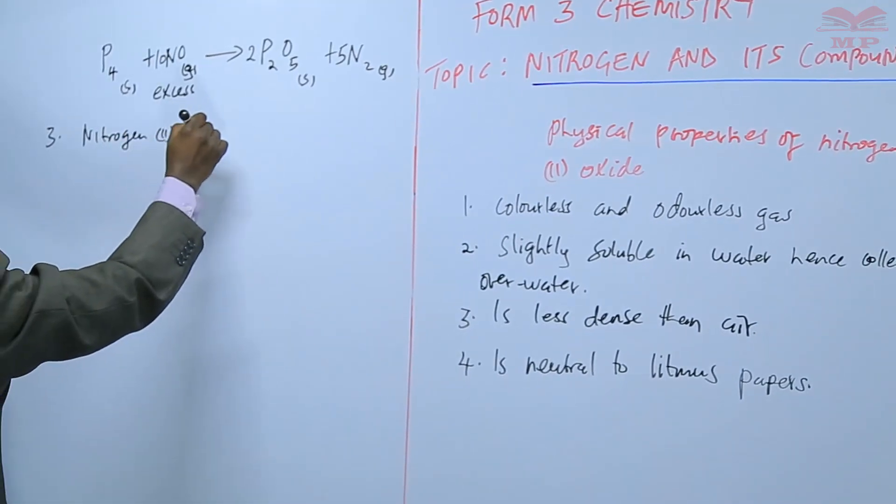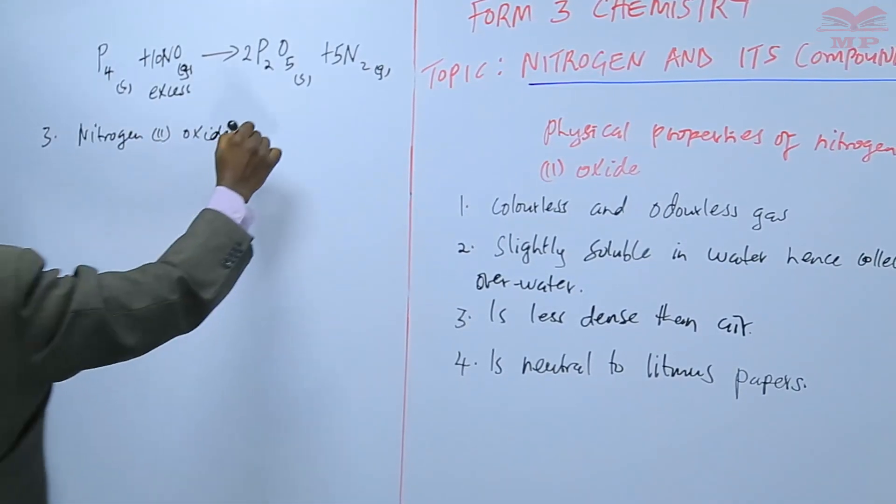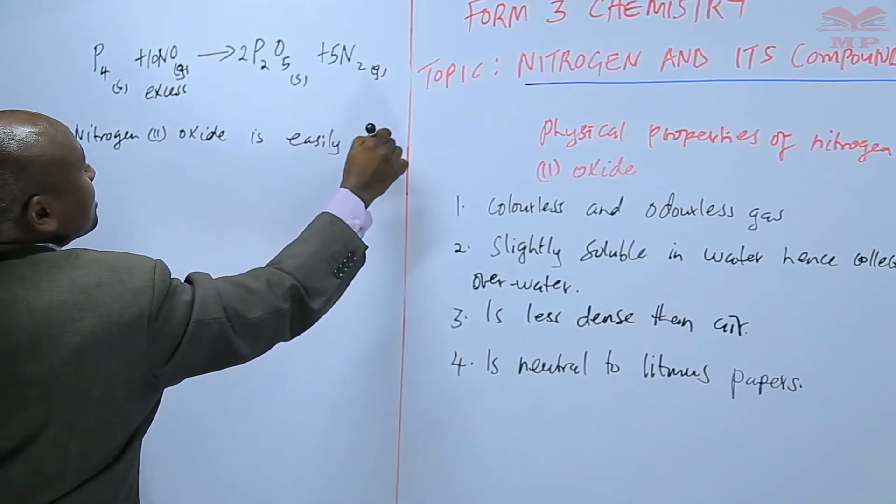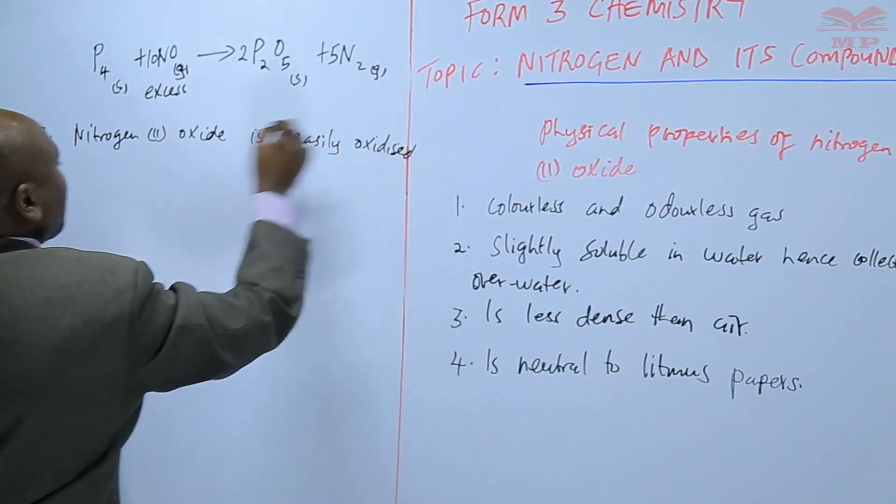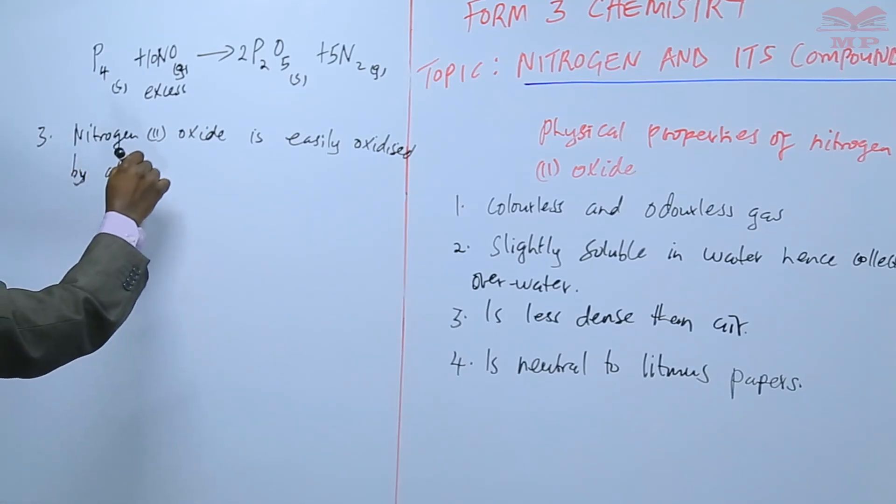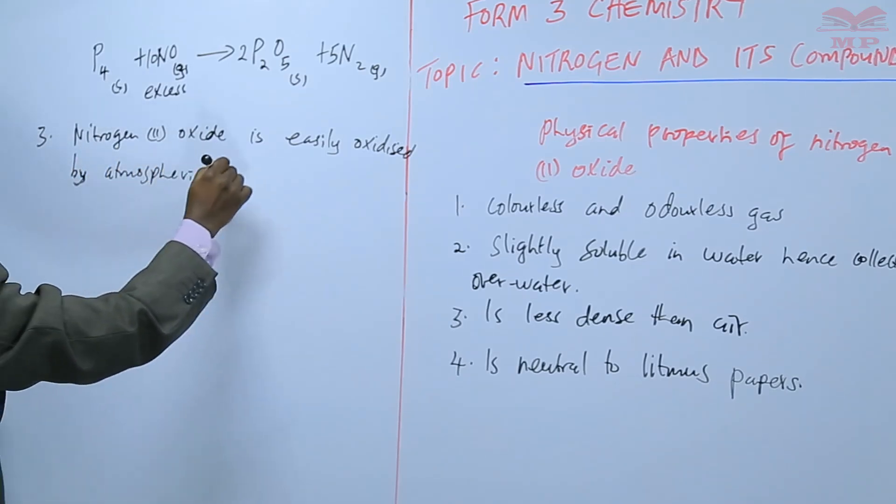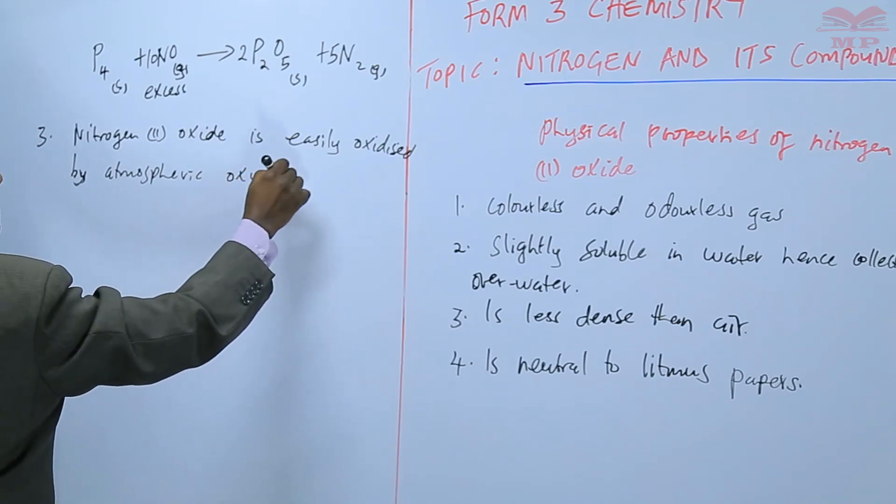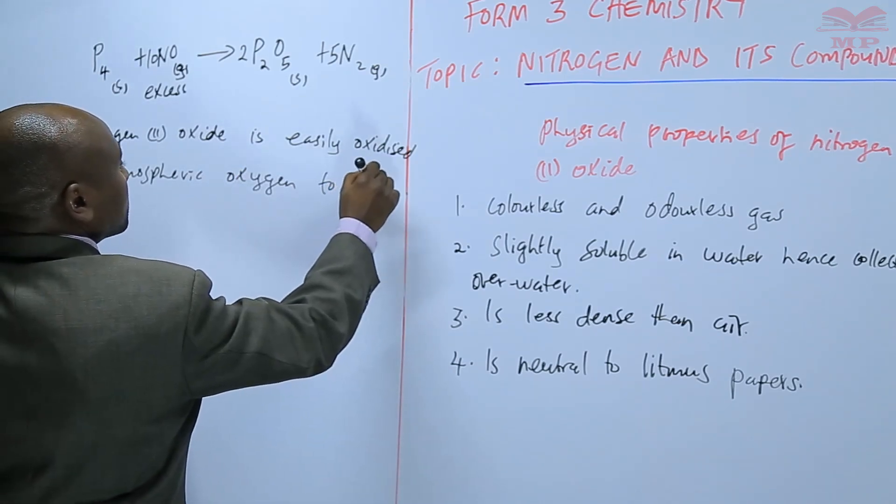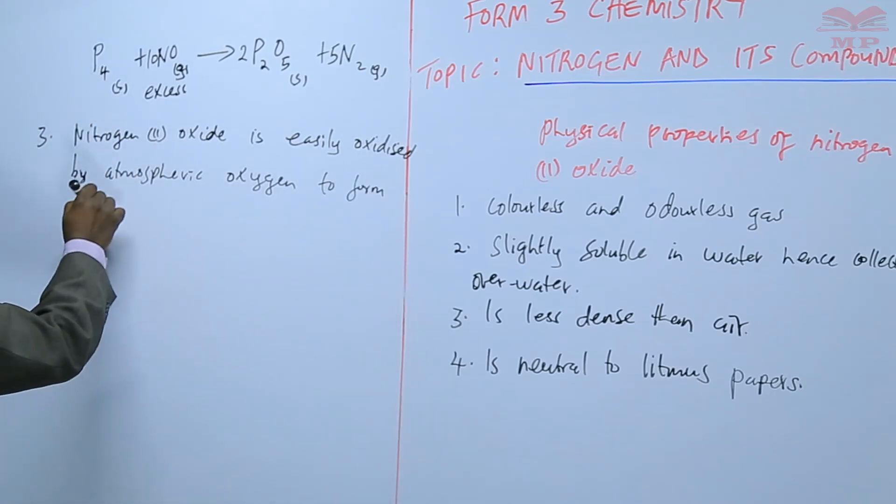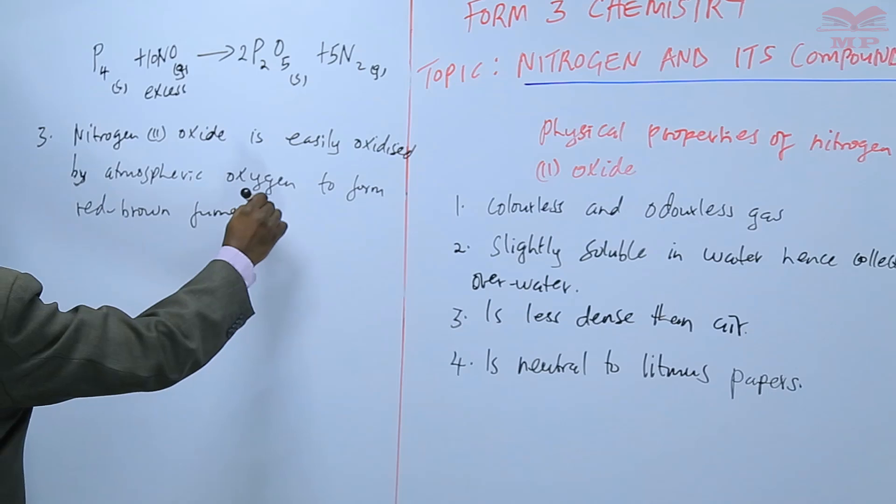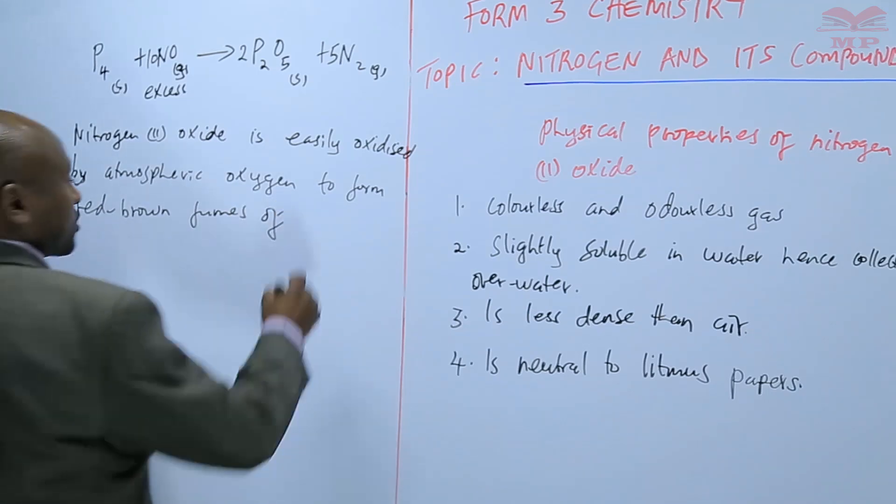Nitrogen 2 oxide is easily oxidized by atmospheric oxygen to form red brown fumes of nitrogen 4 oxide.